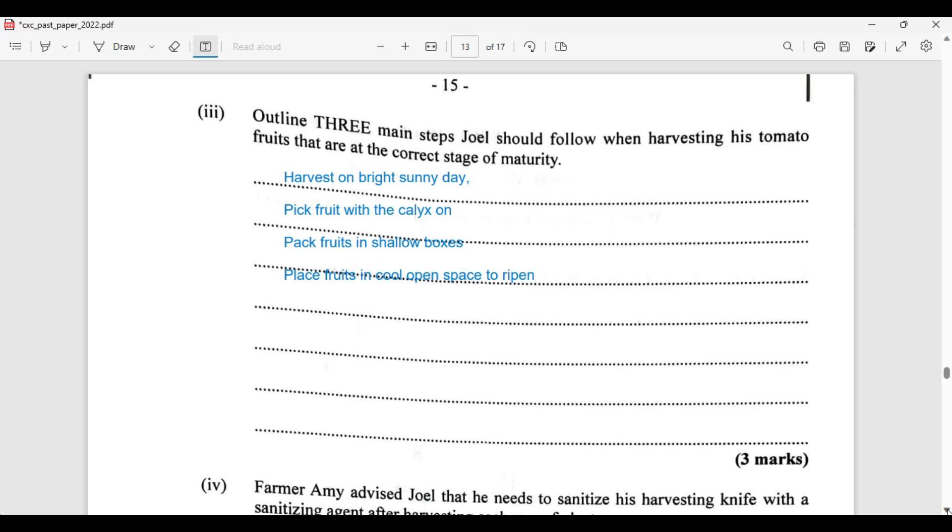Outline three main steps Joel should follow when harvesting his tomato fruits that are at the correct stage of maturity. You want to harvest on a bright sunny day. You want to pick fruits with the calyx still on. You want to pack fruit in a shallow box. And you want to place fruit in a cool, open space to ripen. All these are to be preserved when we are harvesting and after the process.